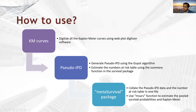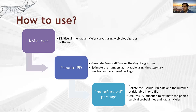Then you can use the mserve function to estimate the pooled survival probabilities and pooled Kaplan-Meier. It also gives you a goodness-of-fit statistic like heterogeneity I-squared, which you can use to see how good your model fit is.